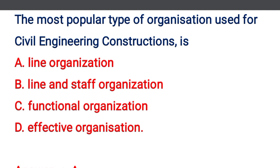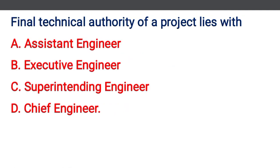Next question: the most popular type of organization used for civil engineering construction is — option A: line organization, option B: line and staff organization, option C: functional organization, option D: effective organization. The correct answer is option A: line organization.